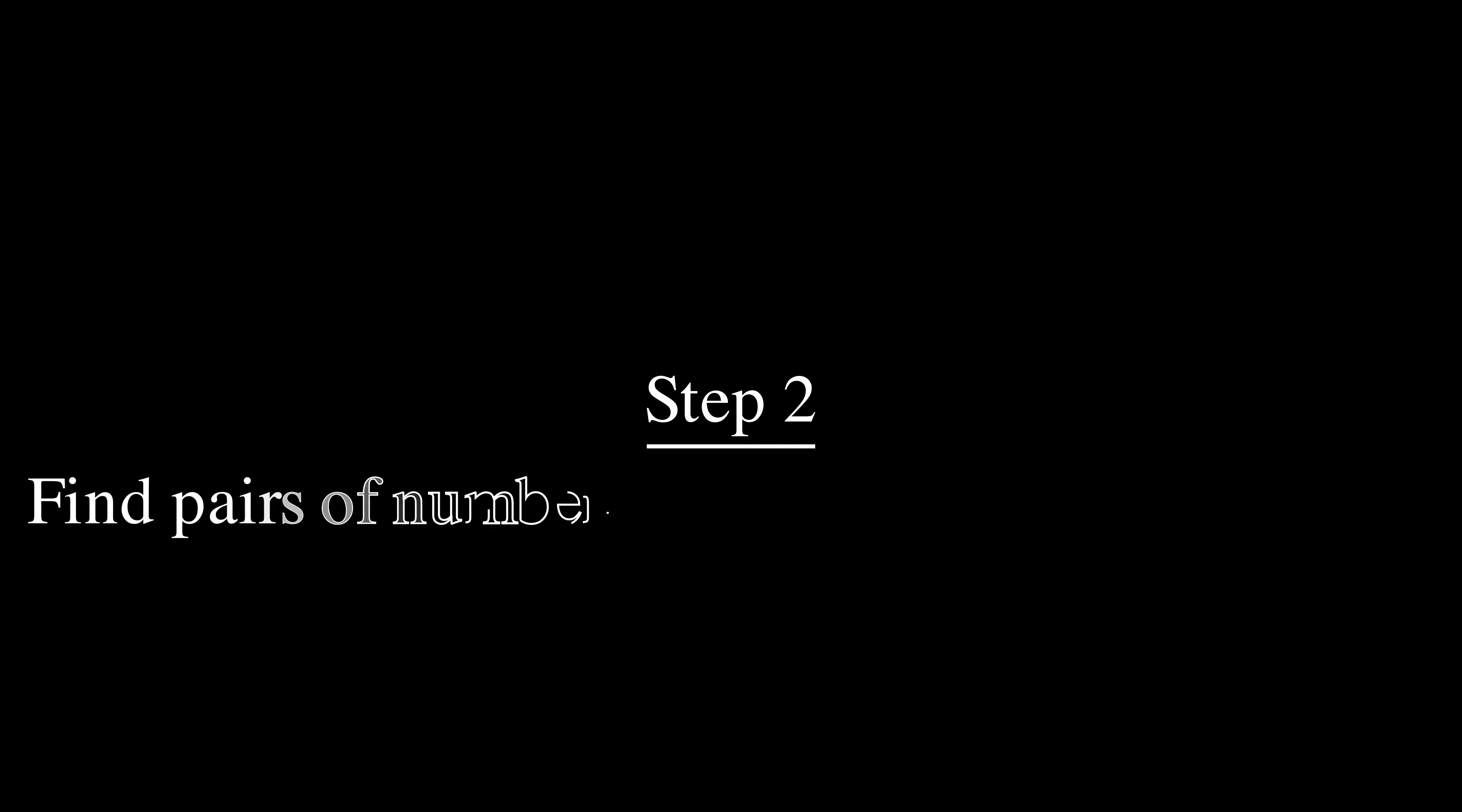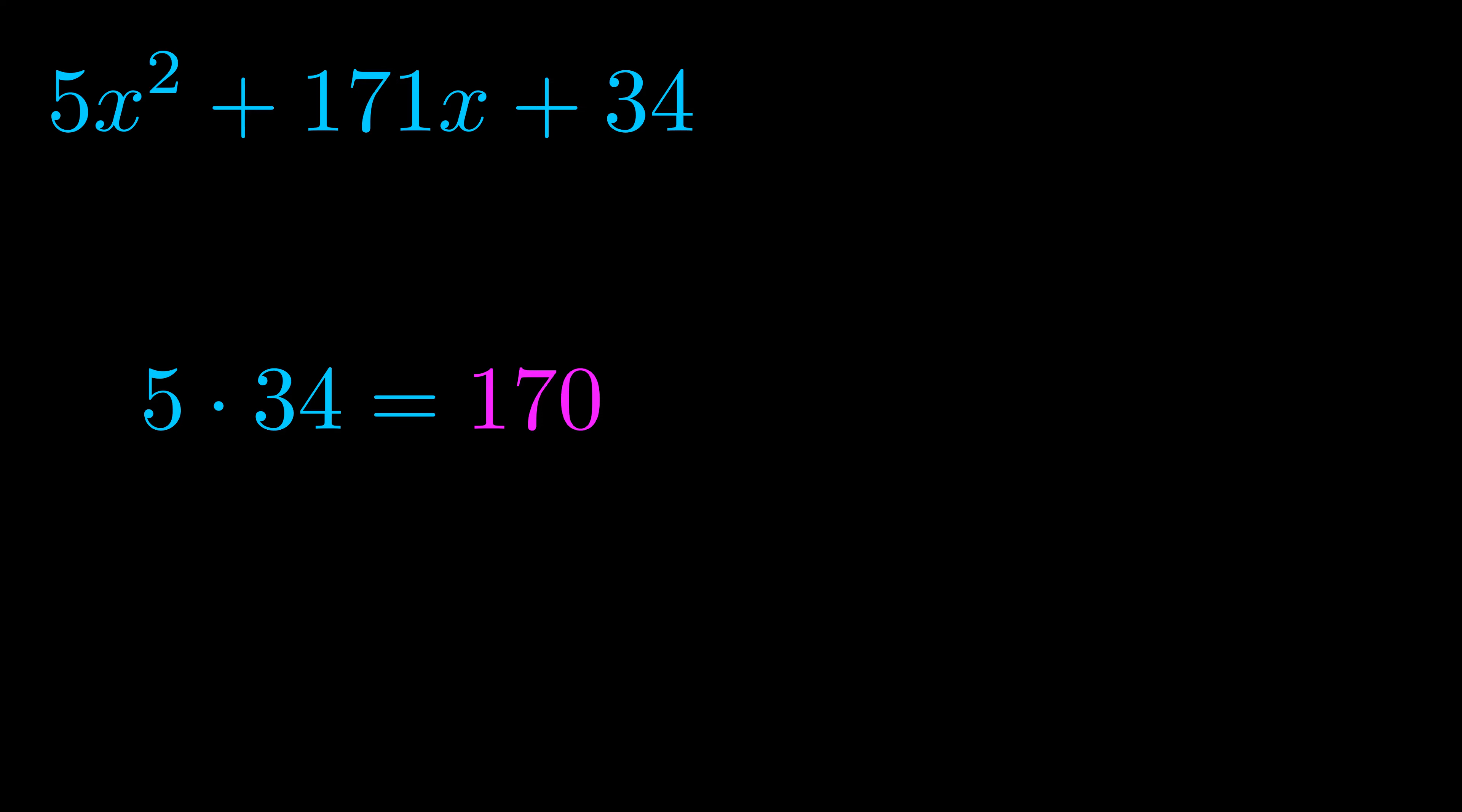Step two is to try to find all of the pairs which multiply to this number. Now turns out you don't really need to find all of them but go ahead and write down as many numbers as you can that multiply to the magenta value for now. Pause the video and resume when you're ready to continue.